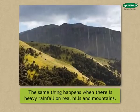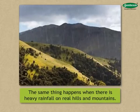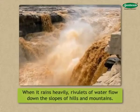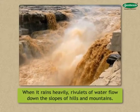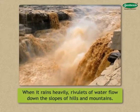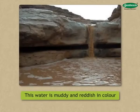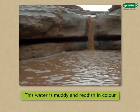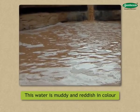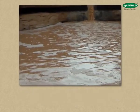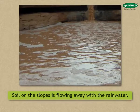The same thing happens when there is heavy rainfall on real hills and mountains. When it rains heavily, rivulets of water flow down the slopes of hills and mountains. This water is muddy and reddish in color, which means that the soil on the slopes is flowing away with the rainwater.